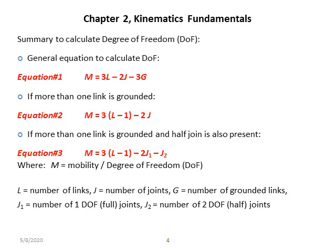If there are more than one grounded or fixed links in a mechanism, then equation number one is not valid. Instead of equation number one, you can utilize equation number two to find the mobility or degree of freedom of the mechanism. Equation number two is m equal to 3 multiplied by (l minus 1), close bracket, minus 2j.